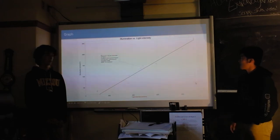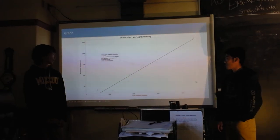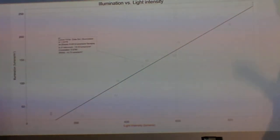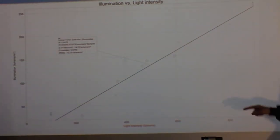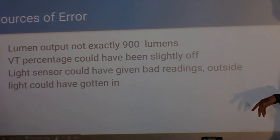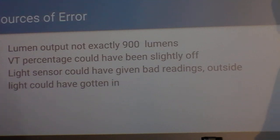This is our illumination graph. We plotted illumination versus light intensity, and the slope would be our lumens. We also did error on the slope, which would correspond to the distance.